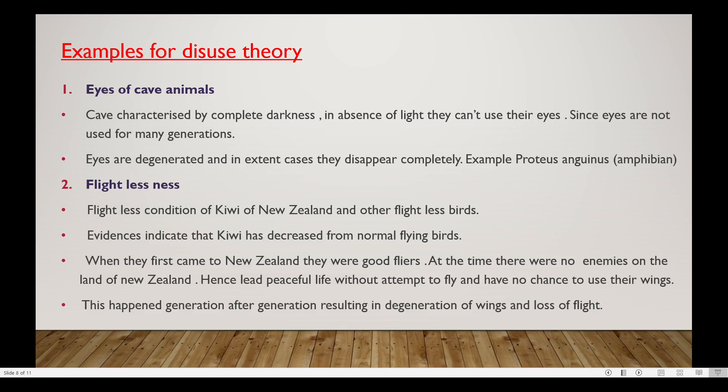The second example of disuse theory is flightlessness. The flightless condition of the kiwi of New Zealand and other flightless birds shows disuse. Evidence indicates that the kiwi descended from normal flying birds.